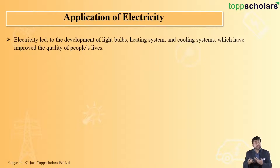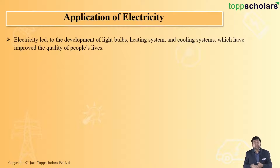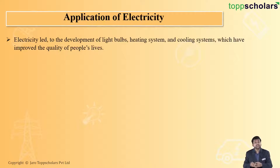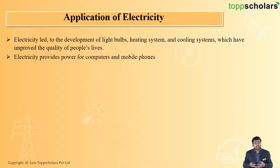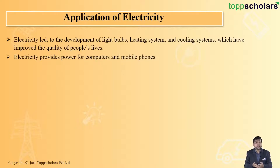For example, if you want to study at night, we use light bulbs. If you're feeling cold, we use heaters. If you're feeling hot, we use air conditioners. All of these work on electricity. There are other applications as well — electricity also provides power for computers and mobile phones.